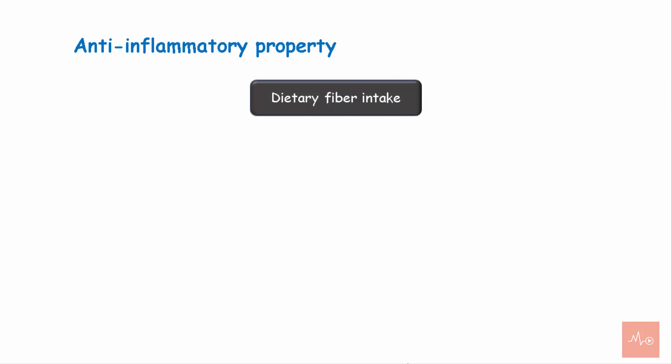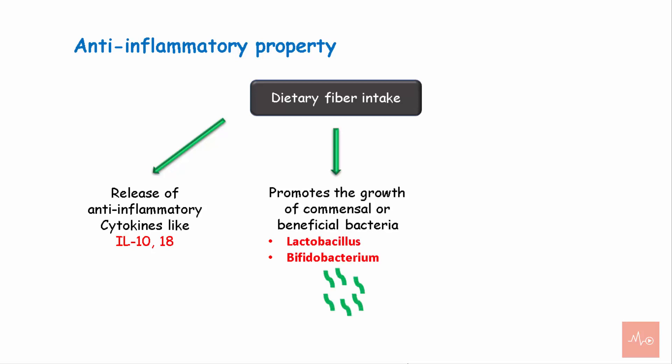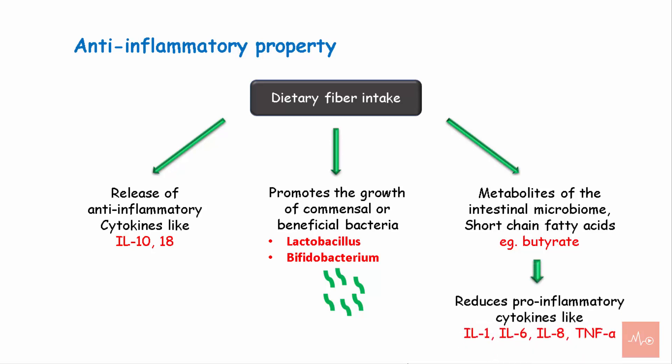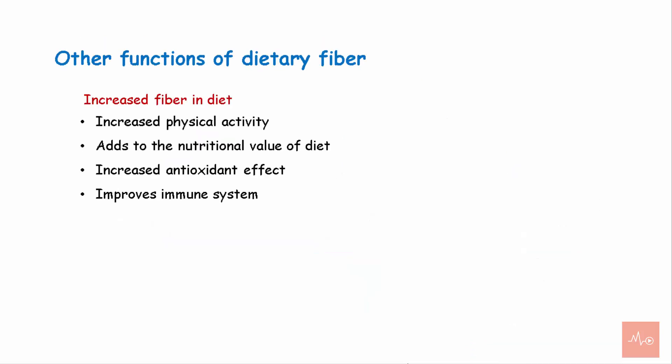The anti-inflammatory effect of dietary fibers can be attributed to the release of anti-inflammatory cytokines like interleukin-10 and interleukin-18. It also promotes the growth of beneficial bacteria like lactobacillus and bifidobacterium, and leads to release of metabolites of the gastrointestinal microbiome — short-chain fatty acids like butyrate — that reduce pro-inflammatory cytokine levels. Increased fiber in the diet also aids in increased physical activity, adds to the nutritional value of the diet, increases the antioxidant effect, and improves the immune system.